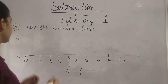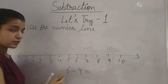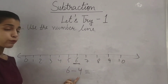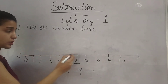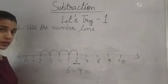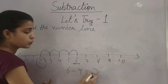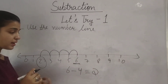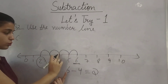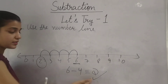Now Part C: 6 minus 4. Find 6 on the number line — it's here. Now go 4 steps back from 6: 1, 2, 3, 4. It means if we subtract 4 from 6, what do we get? 2. We simply went 4 steps back, so the answer is 2.